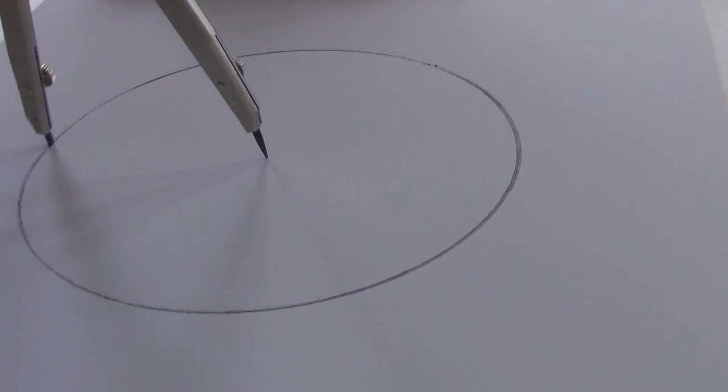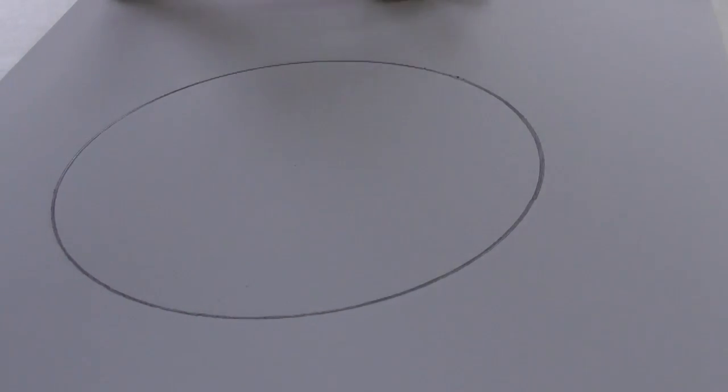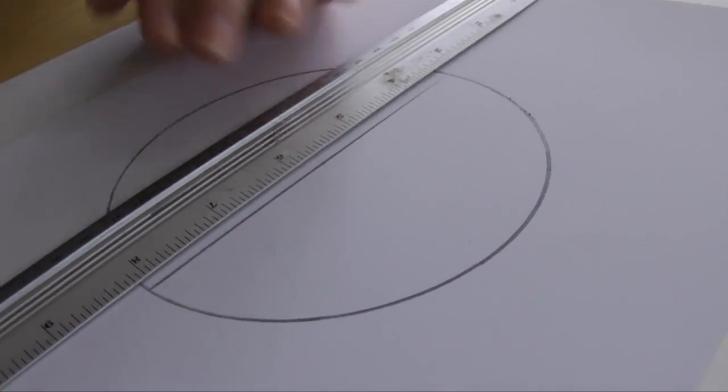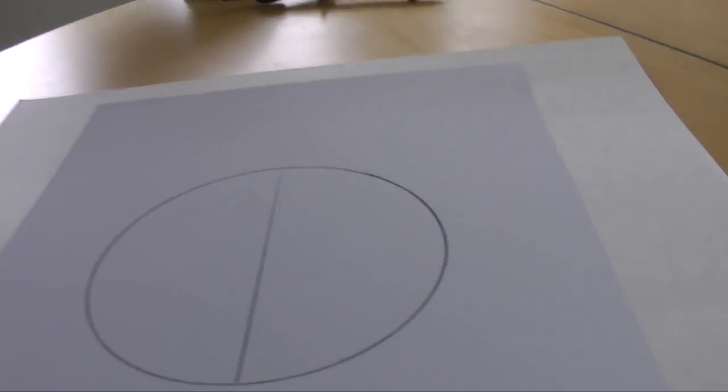Draw a circle. Note the center. Now draw a straight line across the circle that passes through the center. This line represents the diameter of the circle.